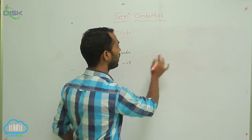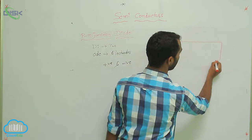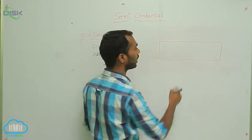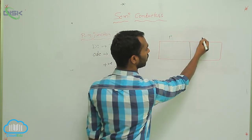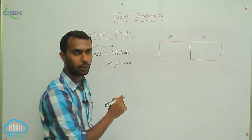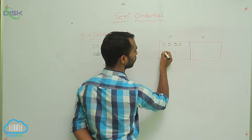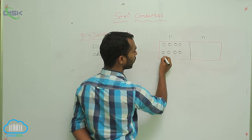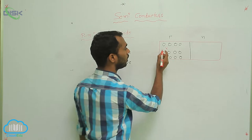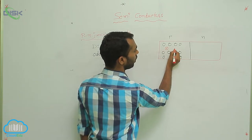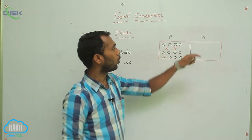Here I am explaining again the P-N junction. You take a P-type semiconductor and an N-type semiconductor. There is a junction separating the P-region and N-region. In the P-region, majority charge carriers are holes — these are the holes present. And the minority charge carriers are electrons.